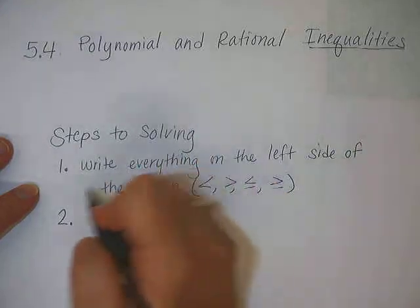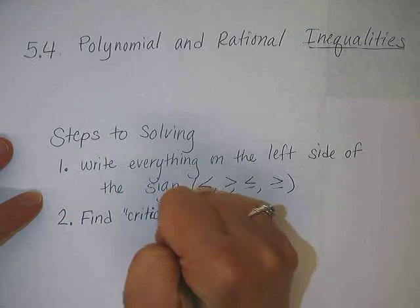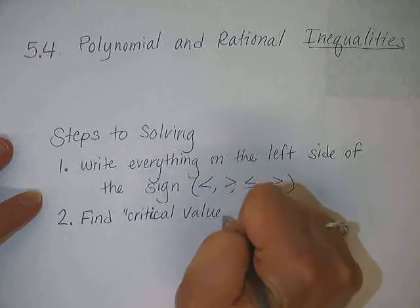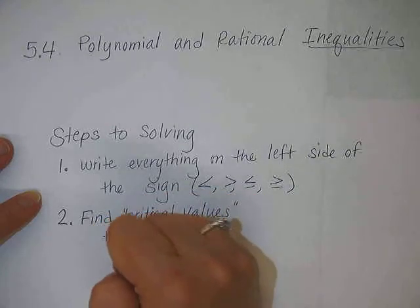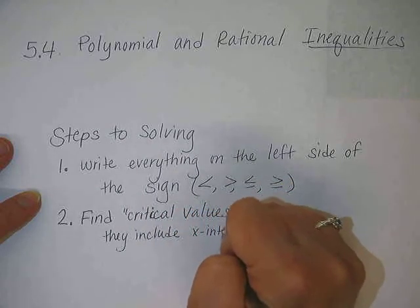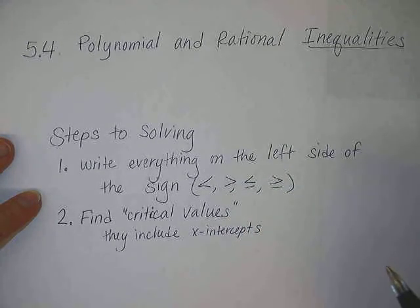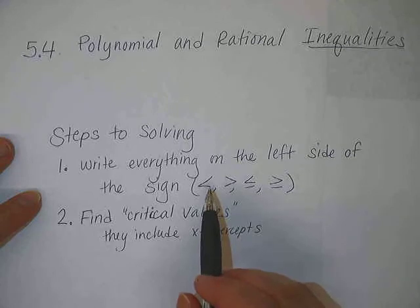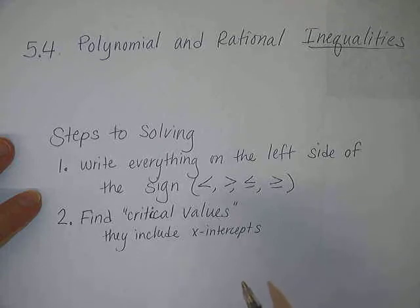The next step is to find what we call critical values. Critical values are x-intercepts. The reason x-intercepts are critical values is because that's where a graph switches from above the x-axis, or positive, to below the x-axis, or negative — where it becomes greater than or less than zero.